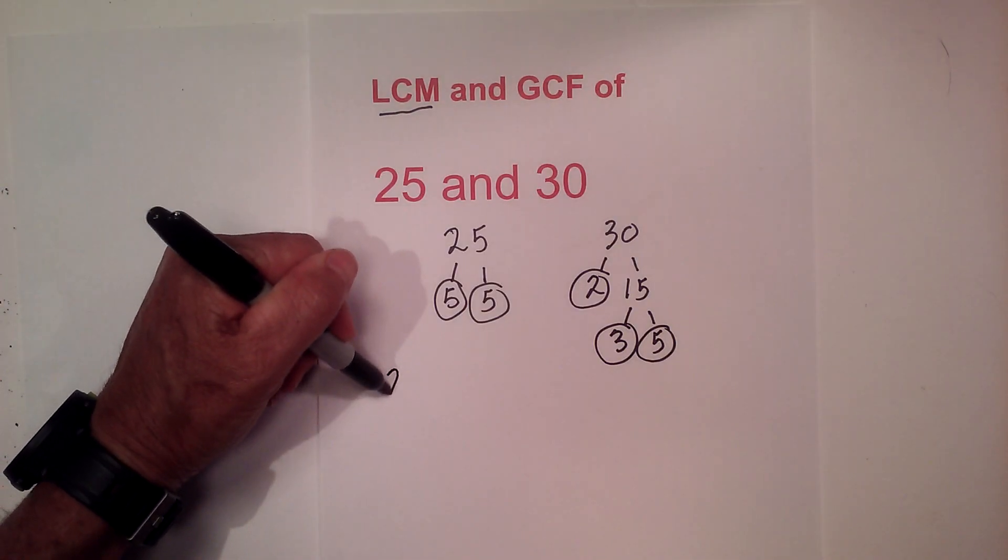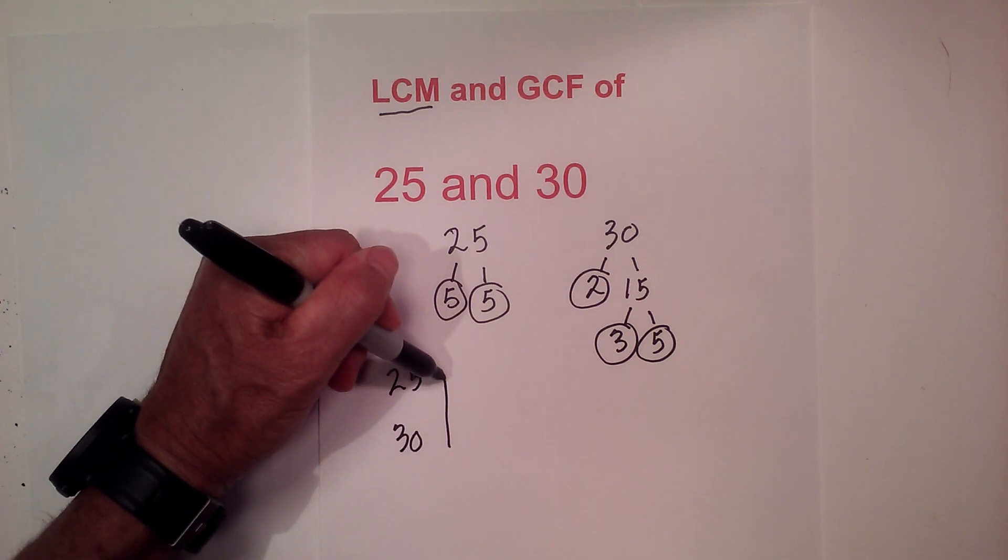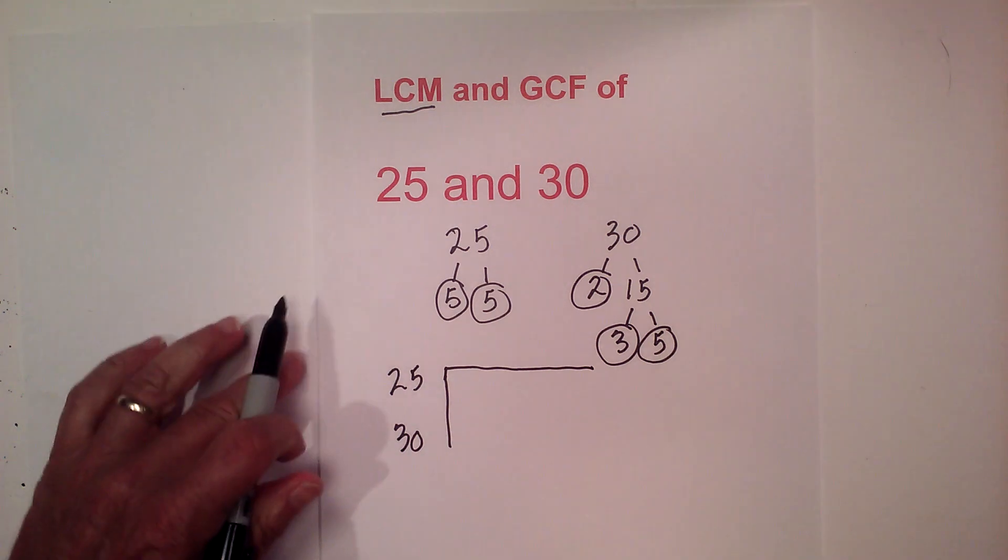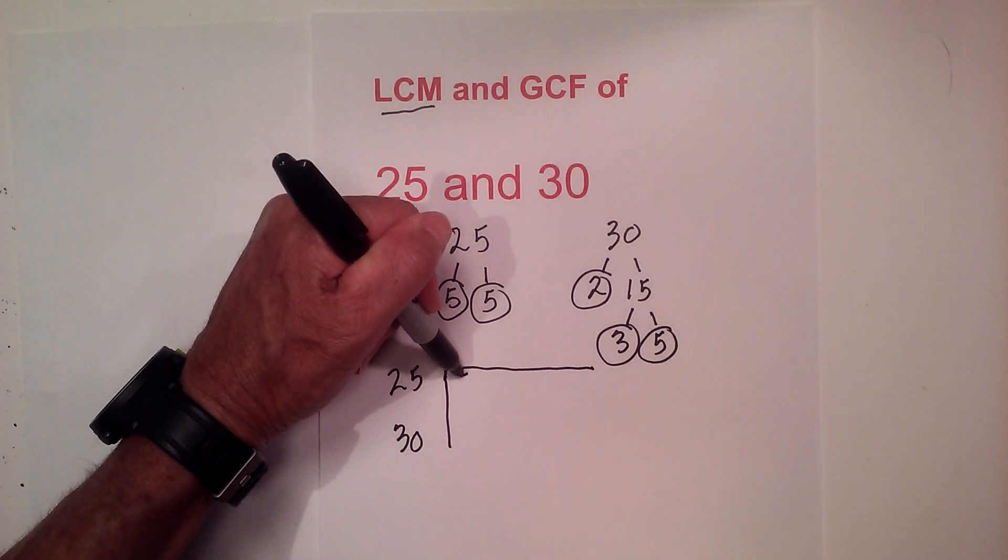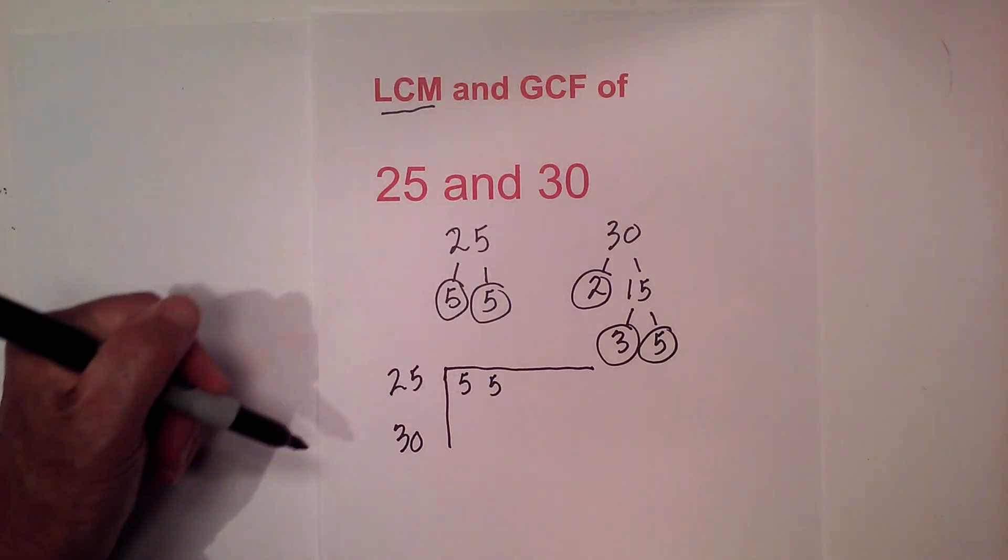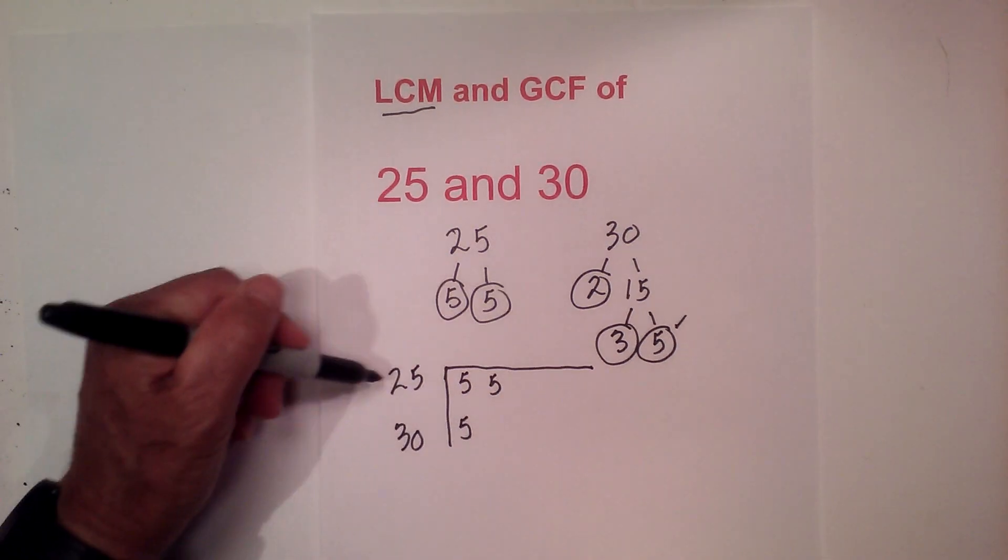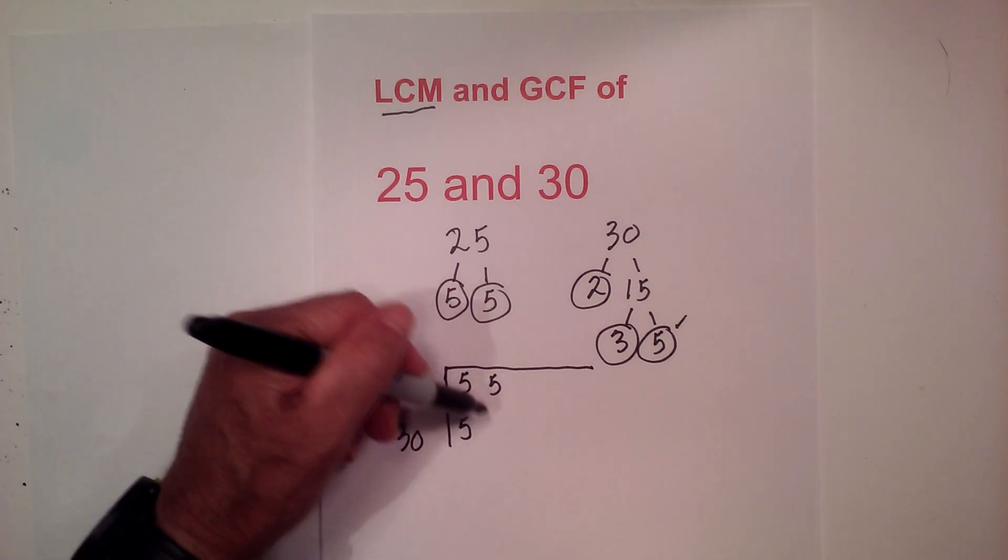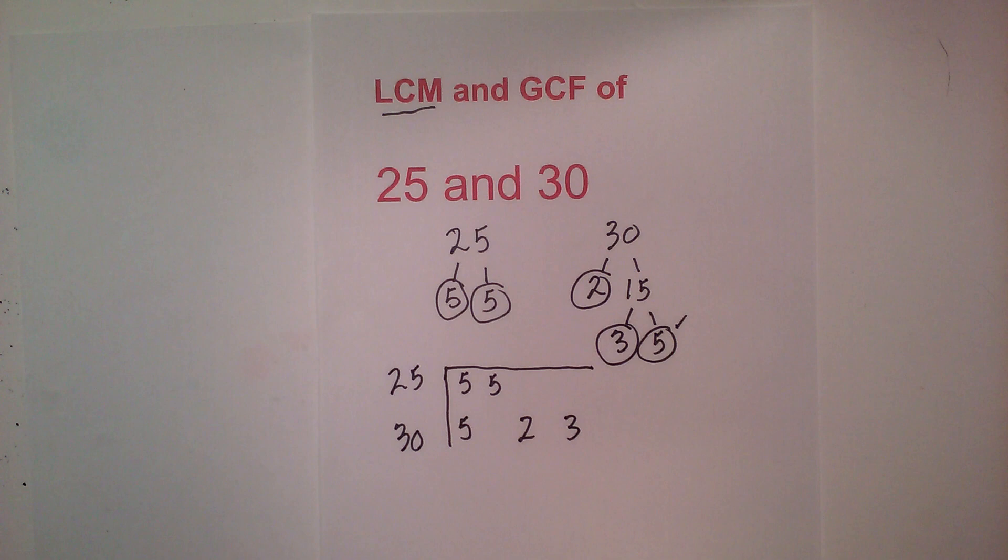I now create a prime number box or table to help prevent errors. So let's write the prime numbers for 25, which are 5 and 5, and for 30 I'm going to start with the 5 because 25 has a 5. I don't have another 5, so I'm going to skip a space and then write the 3.